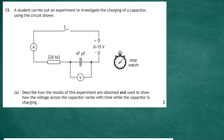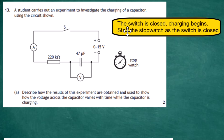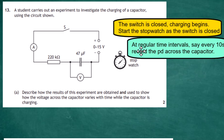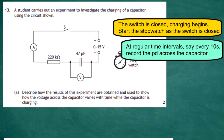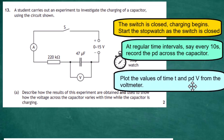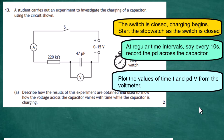For two marks, we are asked to describe how the results of this experiment are obtained and used to show how the voltage across the capacitor varies with time while charging. First, we close the switch and start the stopwatch simultaneously. Then, at regular time intervals — about every 10 seconds — we record the potential difference across the capacitor until it is fully charged.